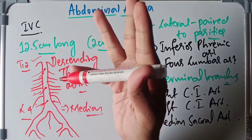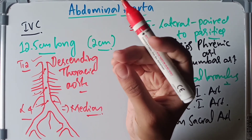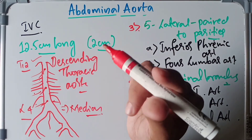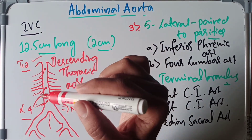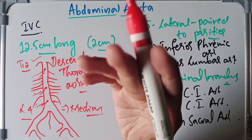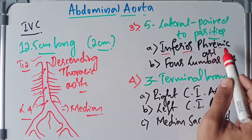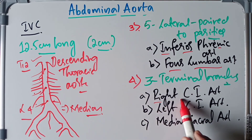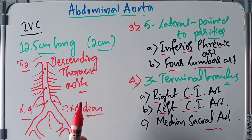To quickly recap: we have three anterior unpaired branches to the viscera — the celiac trunk, superior mesenteric artery, and inferior mesenteric artery. Three lateral paired branches to the viscera — suprarenal artery, renal artery, and testicular or ovarian artery. Five lateral paired branches to the parietes — the inferior phrenic artery and four lumbar arteries. And three terminal branches — the right common iliac, left common iliac, and median sacral artery. This covers the anatomy, relations, measurements, and branches of the abdominal aorta. If you like the video, please subscribe, hit the like button, and share it with your friends. Thank you so much.